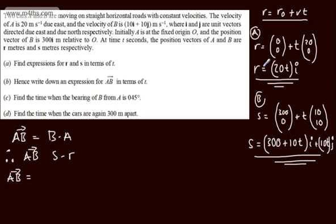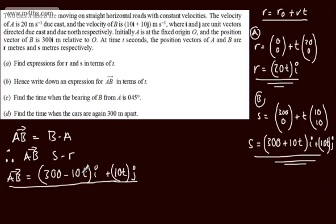I'm simply going to take r from s. So my i component will be 300 minus 10t, and then I will have the 10tj. So plus 10tj. All I've done is written it down. If you want to show some work, we're asked to write it down. That is an expression for the vector AB.